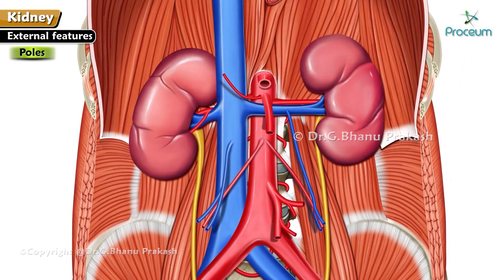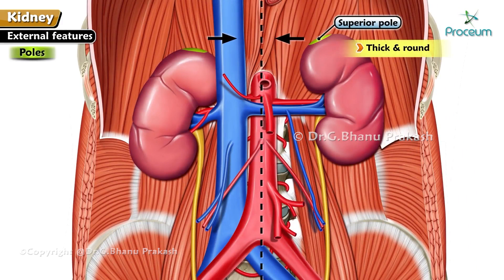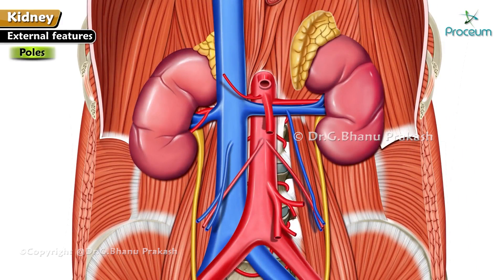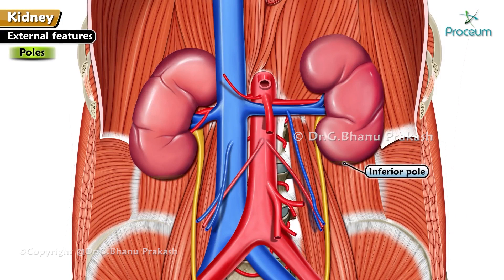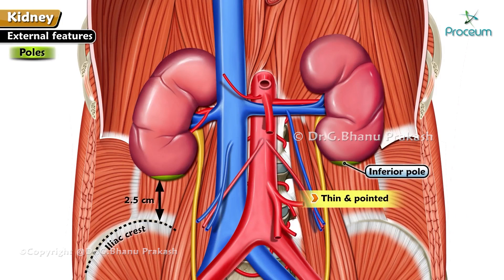The superior pole is thick, round, and closer to the median plane, and is related to the suprarenal gland. The inferior pole is thin, pointed, and lies 2.5 cm above the iliac crest.